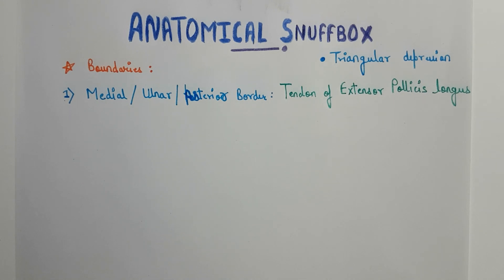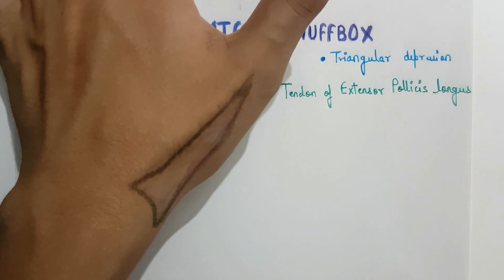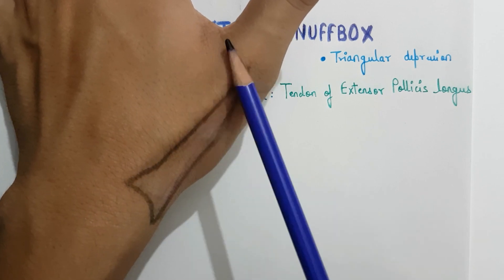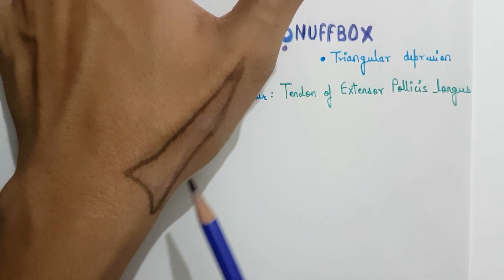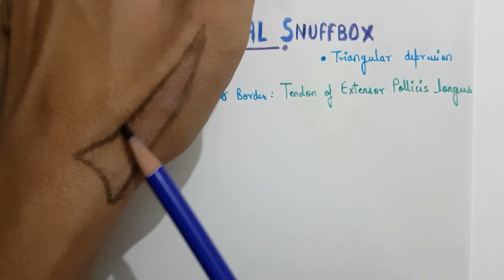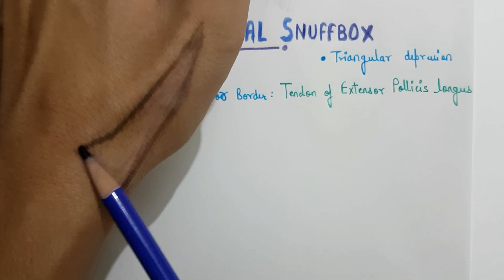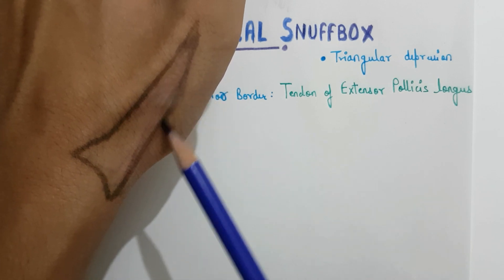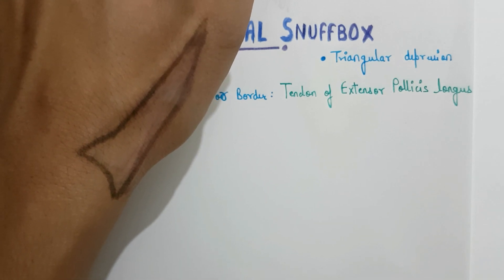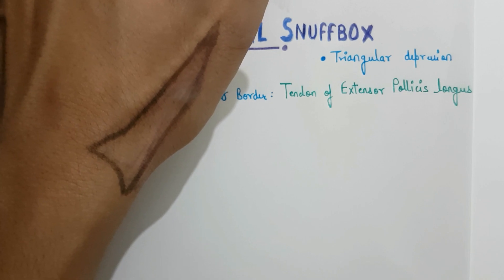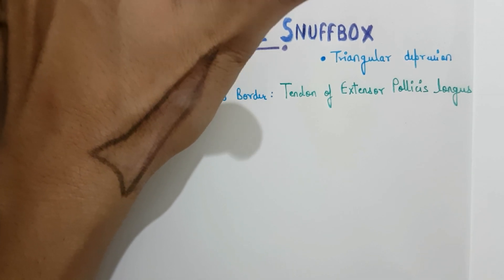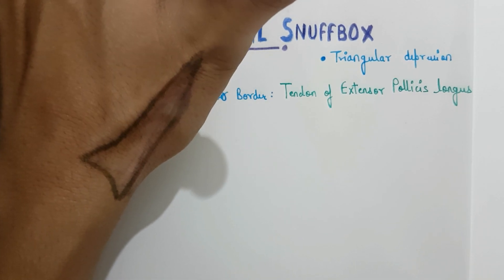The anatomical snuff box is a triangular depression on the posterior lateral side of the wrist. This is the posterior lateral aspect of the wrist, and this is the triangular depression known as the anatomical snuff box. A thing to remember is that the anatomical snuff box is seen best when the thumb is extended.